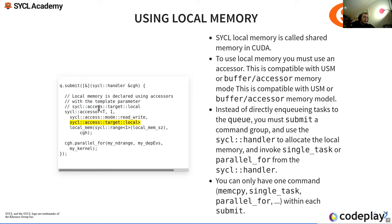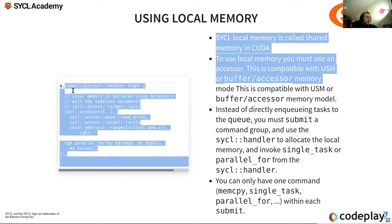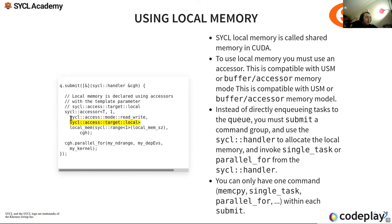A queue.submit can only contain one command — a parallel_for, single_task, mem_copy, etc. We use submit when we need to work with accessors or manage memory. If we don't need accessors, it's simpler to use queue.memcopy or other direct queue methods.